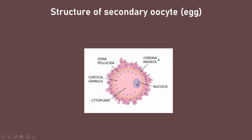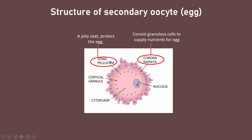The corona radiata consists of many cells known as granulosa cells, which supply nutrients for the development of the egg. The zona pellucida is a jelly-like coat that protects the egg.